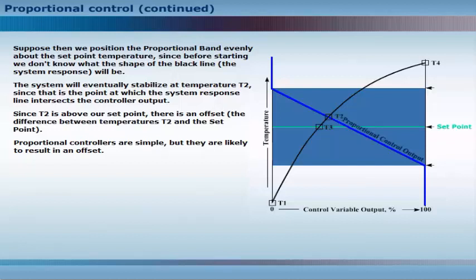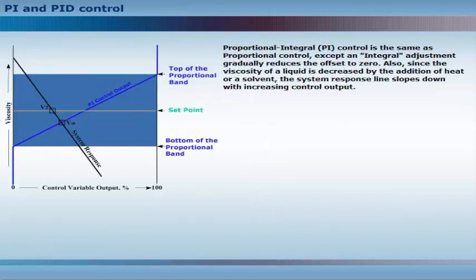Proportional controllers are simple, but they are likely to result in an offset. Proportional integral control is the same as proportional control, except an integral adjustment gradually reduces the offset to zero.